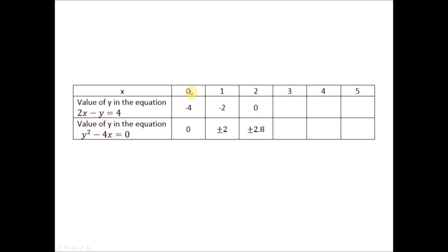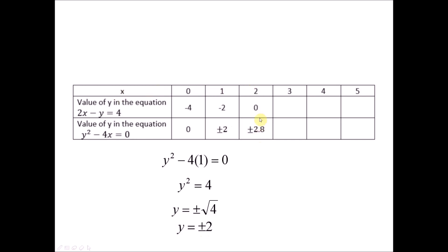For the second (nonlinear) equation: when x is 0, y squared equals 0, so y equals 0. When x is 1, y squared minus 4 equals 0, so y squared equals 4. Taking the square root gives y equals plus or minus 2 — so when x is 1, y can be positive 2 or negative 2. Similarly, when x is 2, y is positive 2.8 or negative 2.8. Fill in all values in the table.